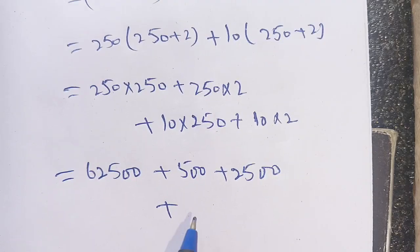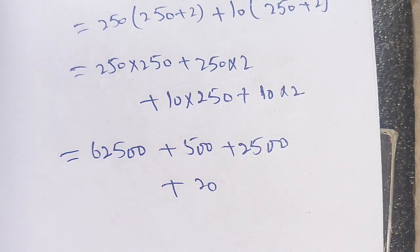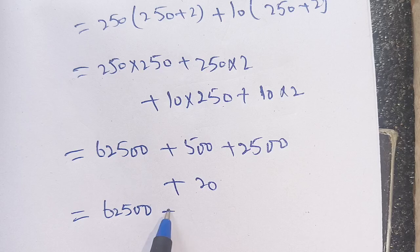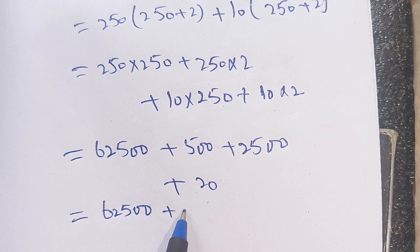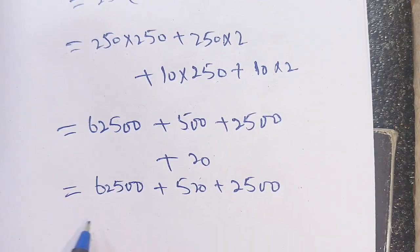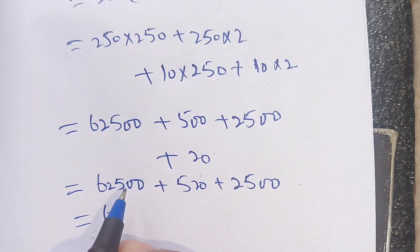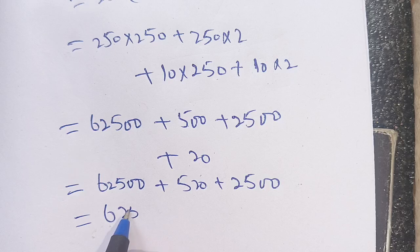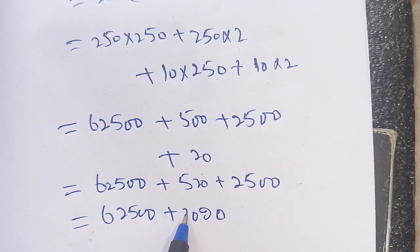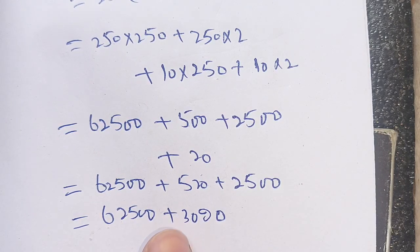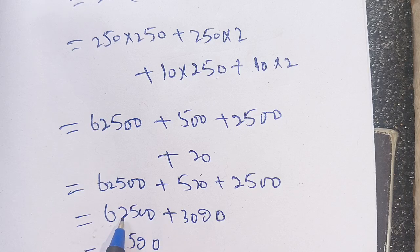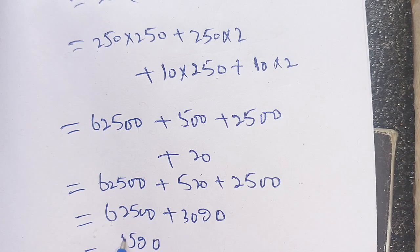Now we add these together: 62,500 plus 500 plus 2,500 plus 20. This equals 62,500 plus 3,020, which gives us 65,520.